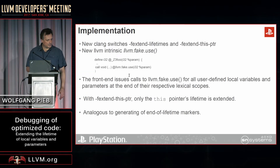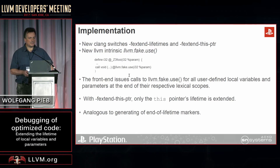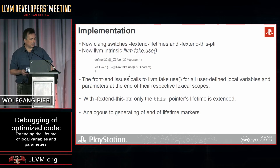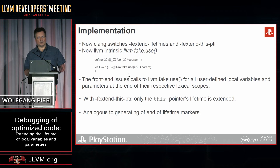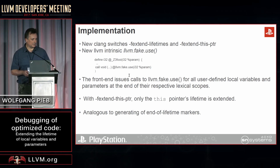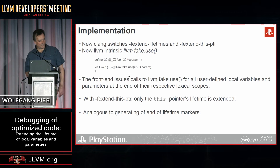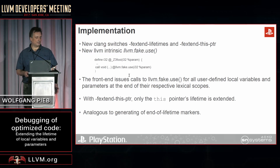So what do we do to implement this? There are a couple of new Clang switches: -fextend-lifetimes and -fextend-this-pointer. The latter is a subset of the former, so when you use -fextend-this-pointer, we only do this for the this-pointer itself, not for the rest of the locals. When you use that switch, Clang generates a new intrinsic called llvm.fakeuse, with the argument being the value of the local or parameter you're trying to extend.